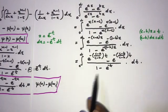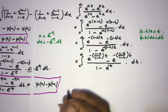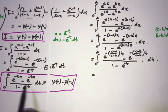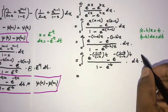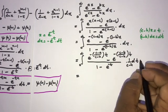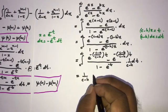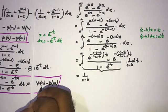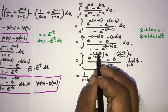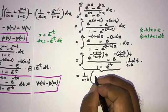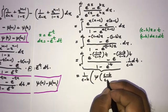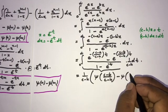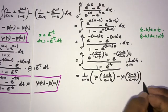Our integral now matches the known form. We also get the factor dx = 1/(c-h) dt, so a constant 1/(c-h) comes out front. Applying the formula with n = (c-b)/(c-h) and m = (c-a)/(c-h), the answer is: 1/(c-h) · [ψ((c-b)/(c-h)) - ψ((c-a)/(c-h))]. This is the final answer.